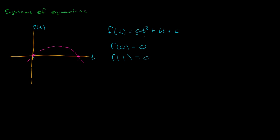What we're trying to do is find a, b, and c for our equation. We can only do this if we have as many known values as we have unknown variables. We have two known values but we need three because there are a, b, and c. So the third value we'll add is f'(t) — the derivative.